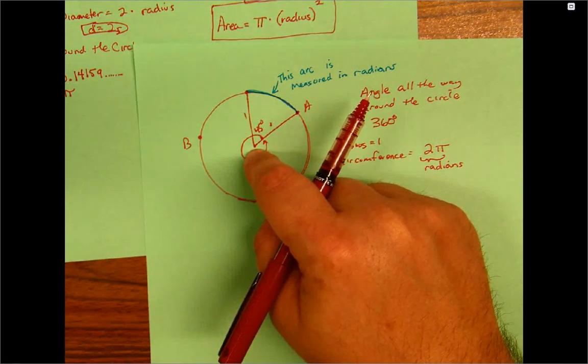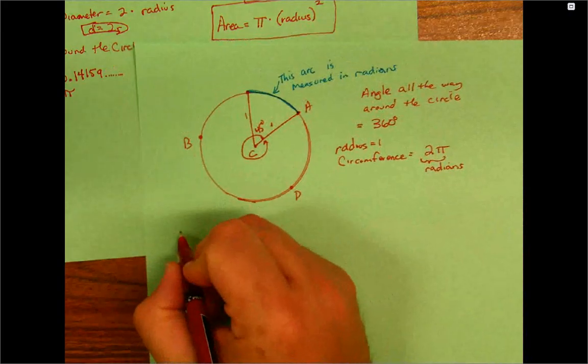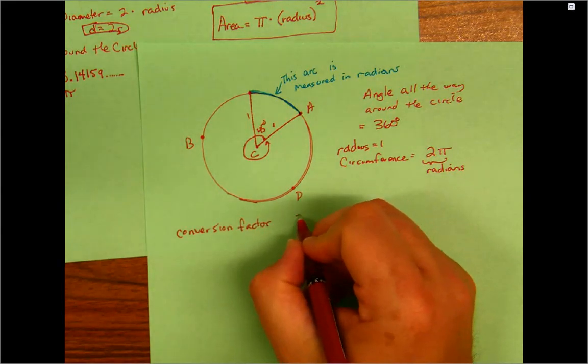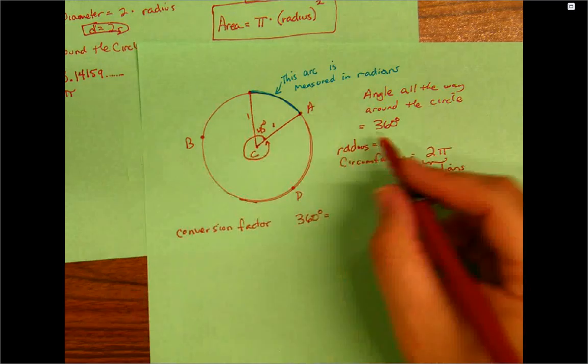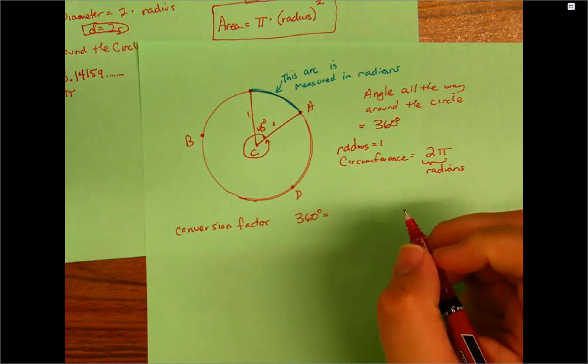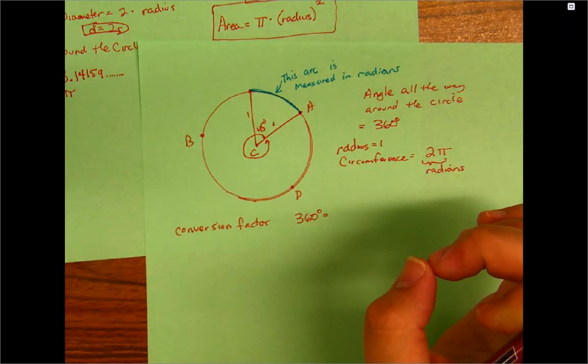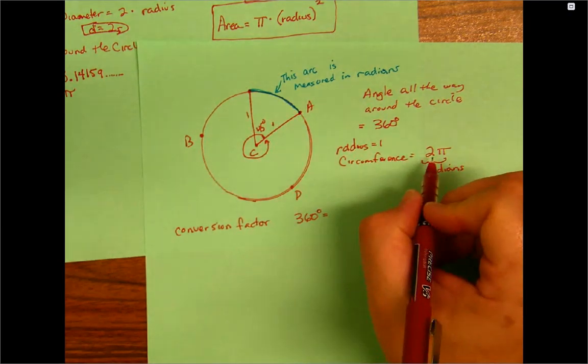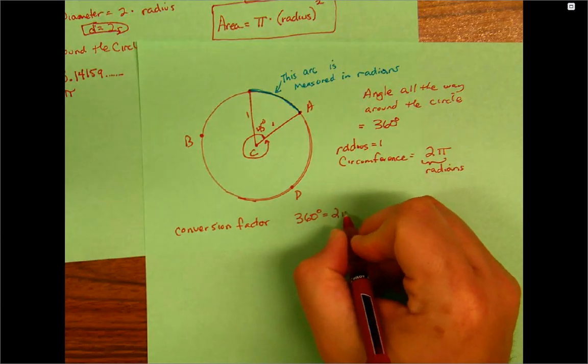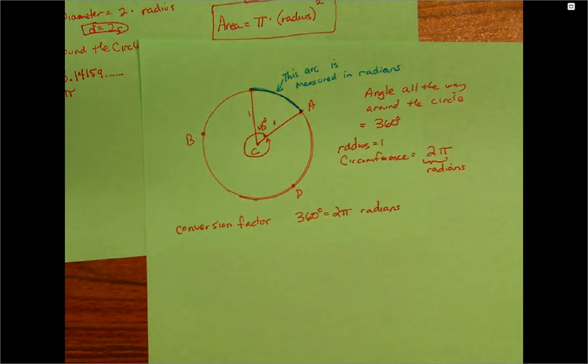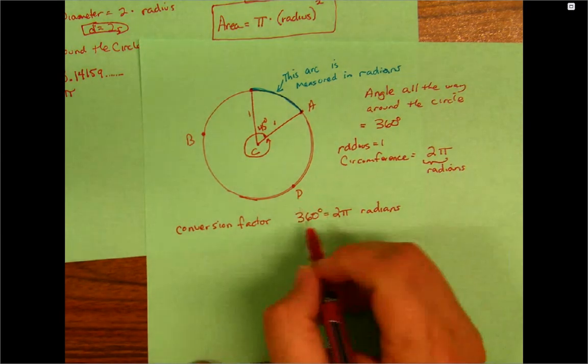The conversion factor is 360 degrees, which would go all the way around the circle. Now, if the radius is 1, what's the circumference? If I started here, it went all the way around, and my radius was 1. So the conversion factor is always going to be 360 degrees is equal to 2π radians. If you want to get fancy, divide everything by 2, you get 180 degrees is equal to π radians.